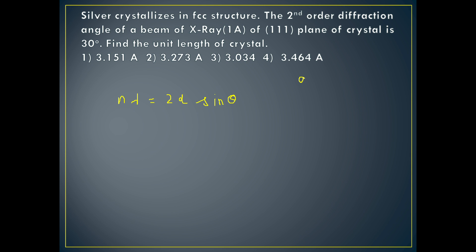We need to find the value of 'a'. In Bragg's law, n is the order of diffraction — the order will be given in the question. Lambda is the wavelength, given as 1 Angstrom. Theta is the angle of diffraction, given as 30 degrees.